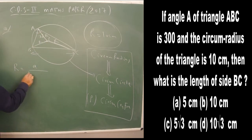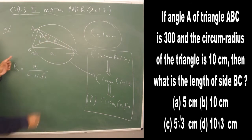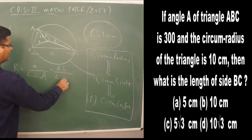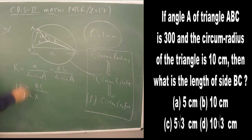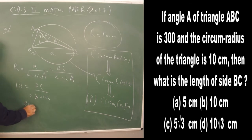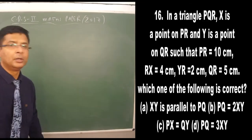Using the formula R = a/(2 sin A), where a is the side opposite angle A (i.e., BC): 10 = BC/(2 × sin 30°). Since sin 30° = 1/2, we get BC = 10 × 2 × (1/2) = 10 cm.